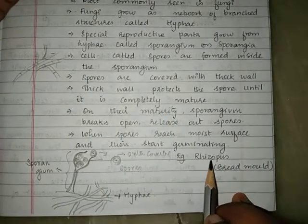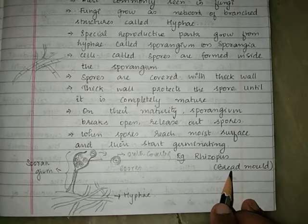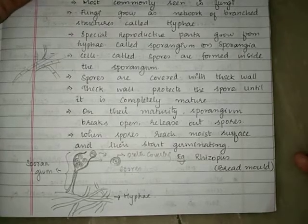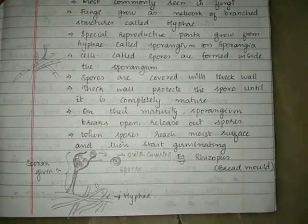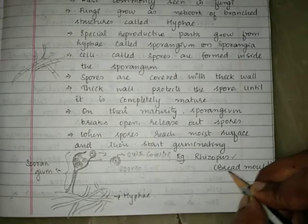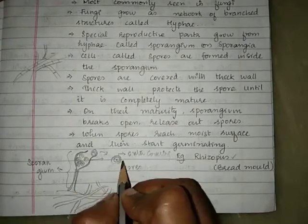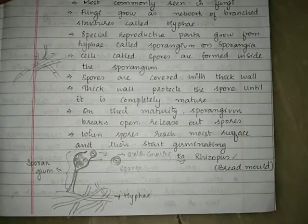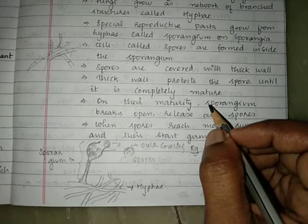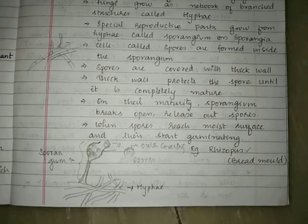An example of a fungus is Rhizopus, commonly called bread mold because it easily grows on bread — the black-colored growth seen on bread left on a moist open surface for two days is this Rhizopus fungus. Its type of asexual reproduction is spore formation, where spores are formed inside the sporangium. With this, we have completed the methods of asexual reproduction. In the next video we will see about sexual reproduction.